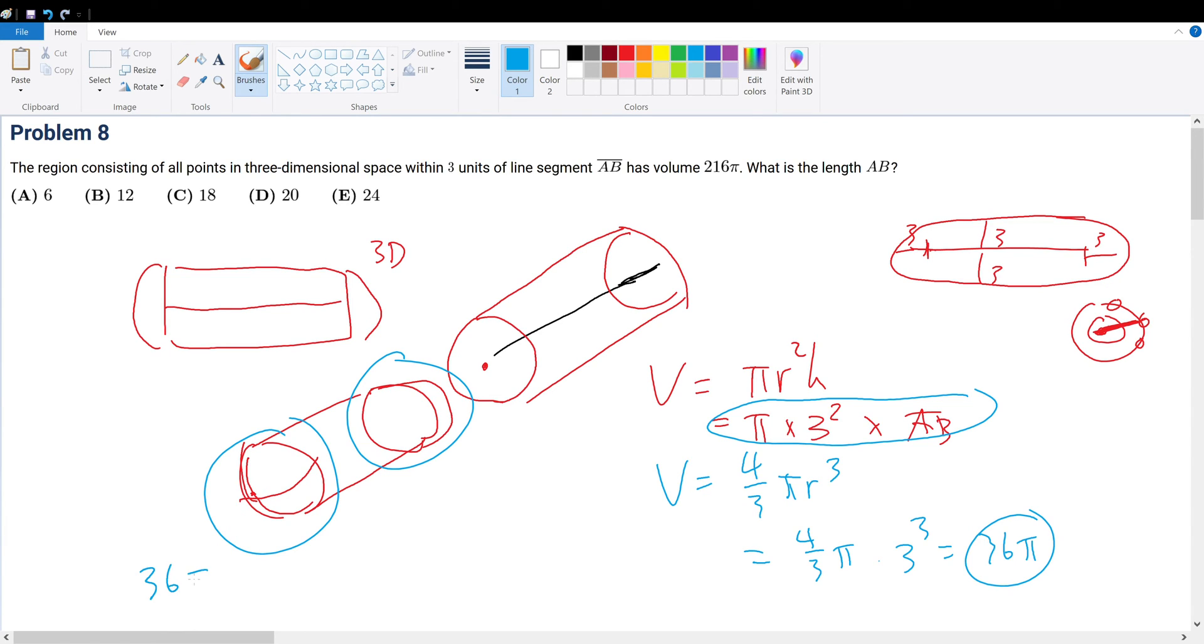The π and π gets eliminated, and then we subtract 36 on both sides. 9AB is equal to 180. Therefore AB divided by 9 is equal to 20. So your final answer will be answer choice D.